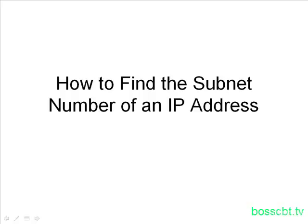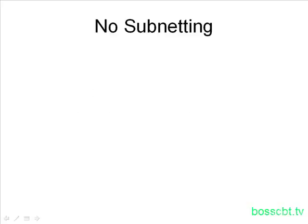Like all things with IP addressing, it's a relatively simple process to figure out the answer. You just have to memorize a few things and then practice it. Let's take our first example, and this is going to be an easy one because we're not going to be performing any subnetting. Our IP address is 10.0.20.5, and it has not been subnetted.